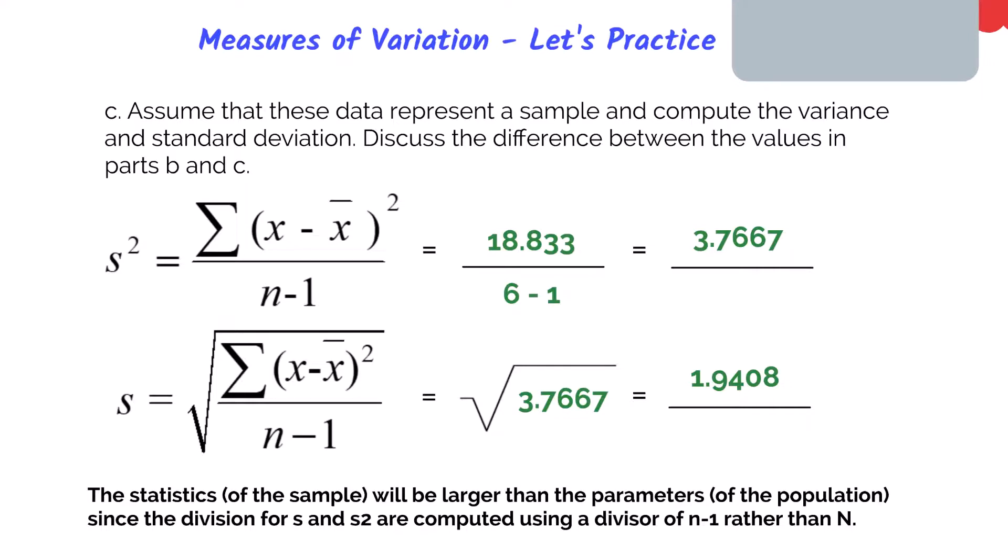Now what you'll notice is that the statistic from our sample is larger than the parameters which we calculated in part b. The sample variance and sample standard deviation has a different divisor than the population. Our divisor here is n minus 1, so we're dividing by 5 instead of 6. The reason why sample statistics will have a larger variation than our parameters from the population is because we're not analyzing all the data. We must acknowledge that there's going to be more variation, and so that's why you see the difference when you're comparing statistics with population parameters.